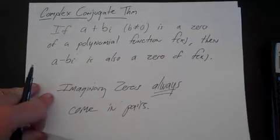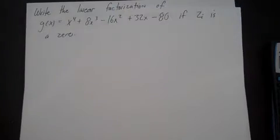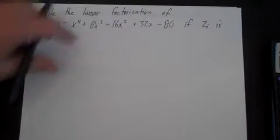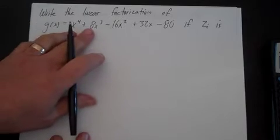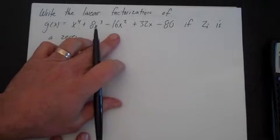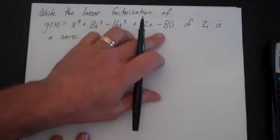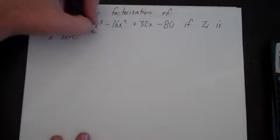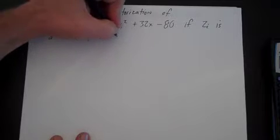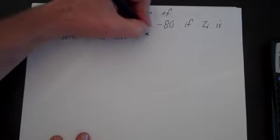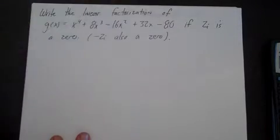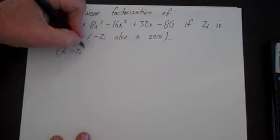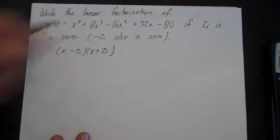That's the complex conjugate theorem, so let's apply it. The first example: let's write the linear factorization of g(x) = x⁴ + 8x³ - 16x² + 32x - 80, if 2i is a zero. If 2i is a zero, then -2i is also a zero, which means that (x - 2i) and (x + 2i) are factors.